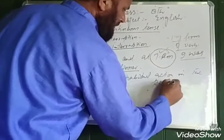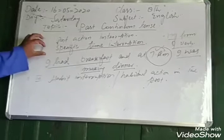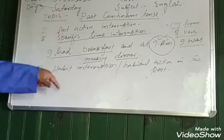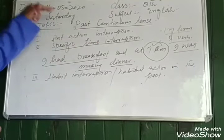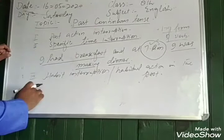Habitual action in the past is another thing to understand. Specific time action — without these things, we cannot understand, write, or clarify past continuous tense without these situations. These situations must be present.